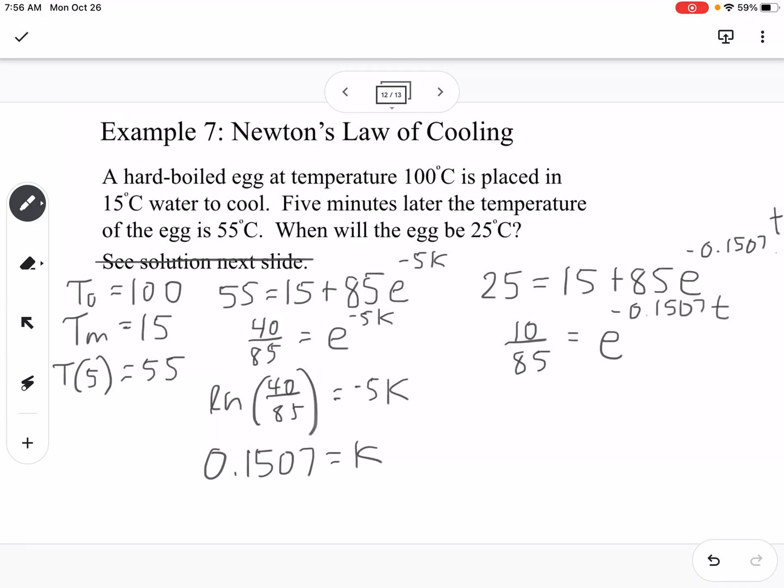We're going to switch the form. It would be natural log of 10 over 85 equals negative 0.1507T. We take that in the calculator, divide by negative 0.1507, and we get 14.2 minutes.